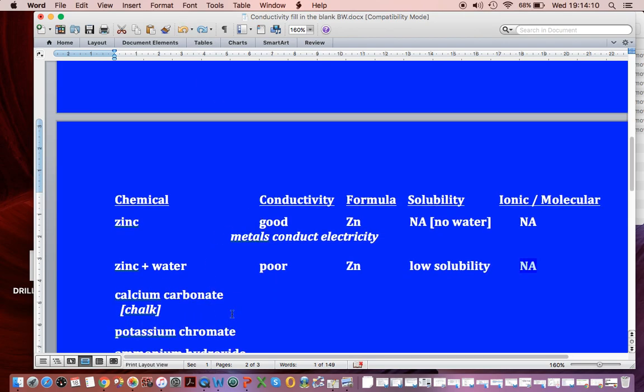Calcium carbonate. Sometimes called marble chips. Stuff you find in chalk and limestone. It was poor. Its formula is CaCO3. It has low solubility. And it is ionic.